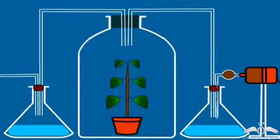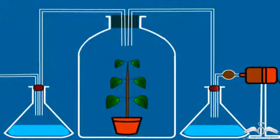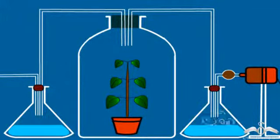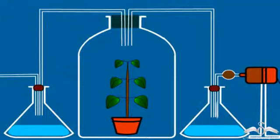An air generator supplies air and it is passed through solid soda lime. Soda lime absorbs carbon dioxide in the air. To test if the air coming out of the solid soda lime is free of carbon dioxide, this air is bubbled through lime water. Lime water generally turns milky if there is carbon dioxide in the air. But the lime water does not turn milky, proving that the air is devoid of carbon dioxide but contains oxygen.